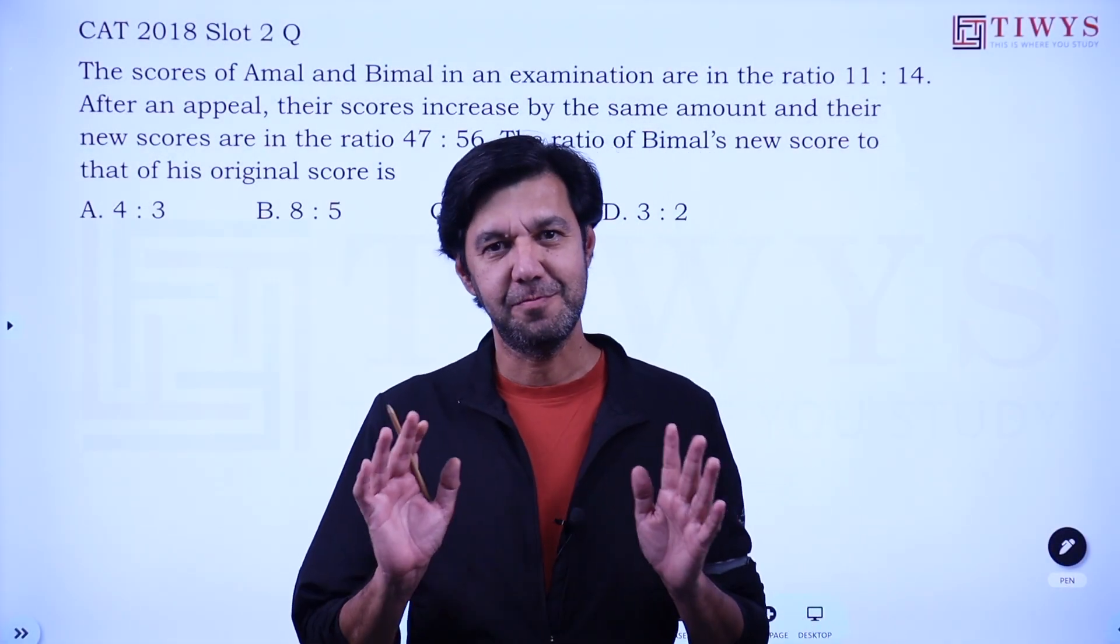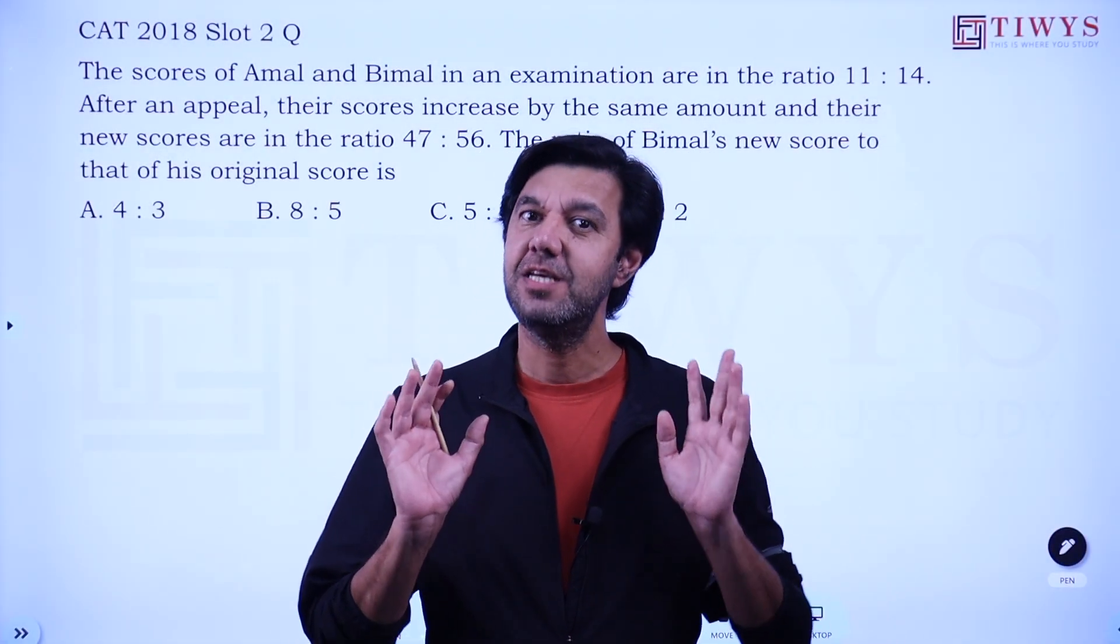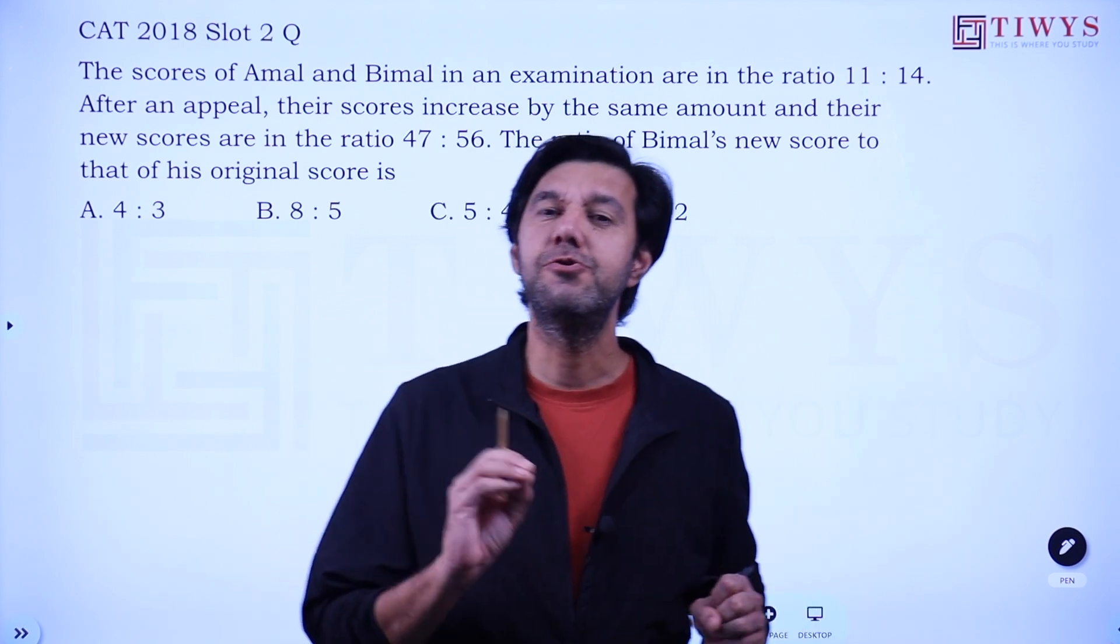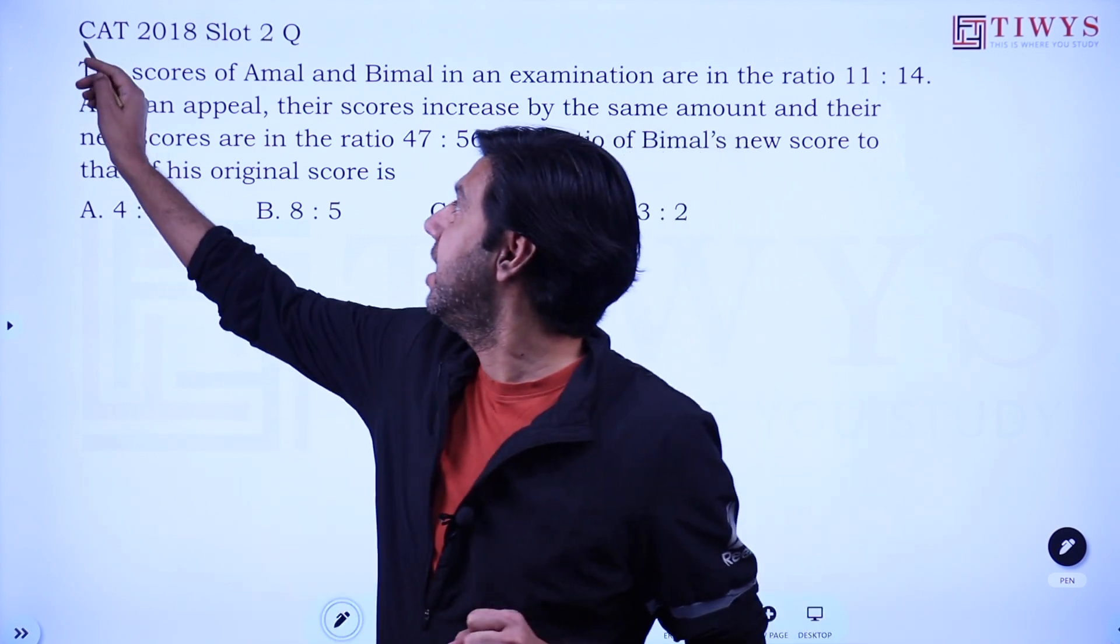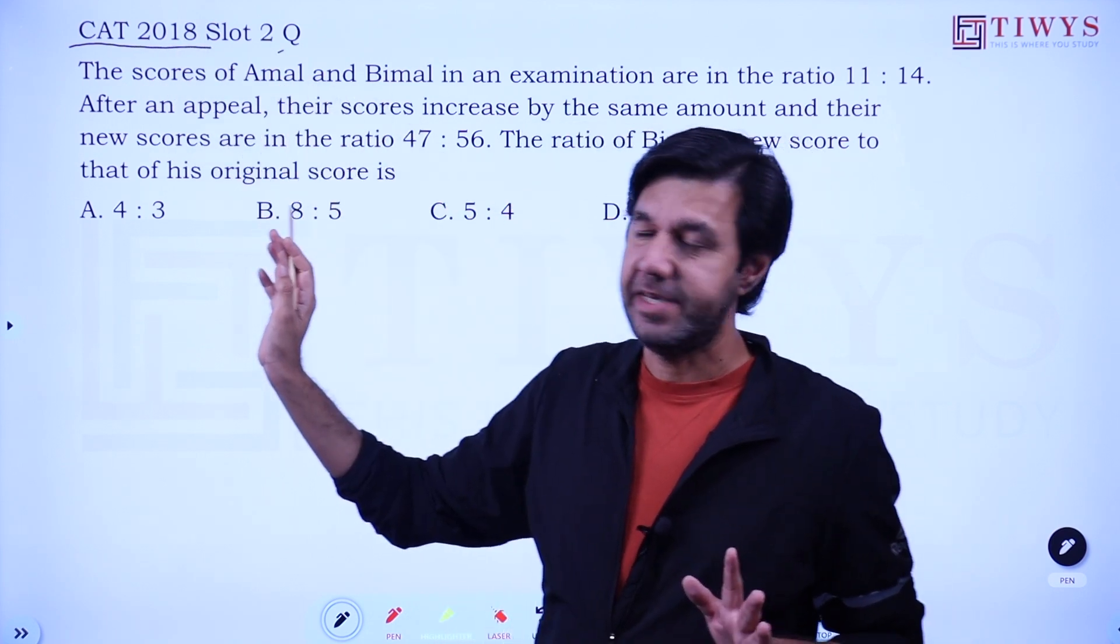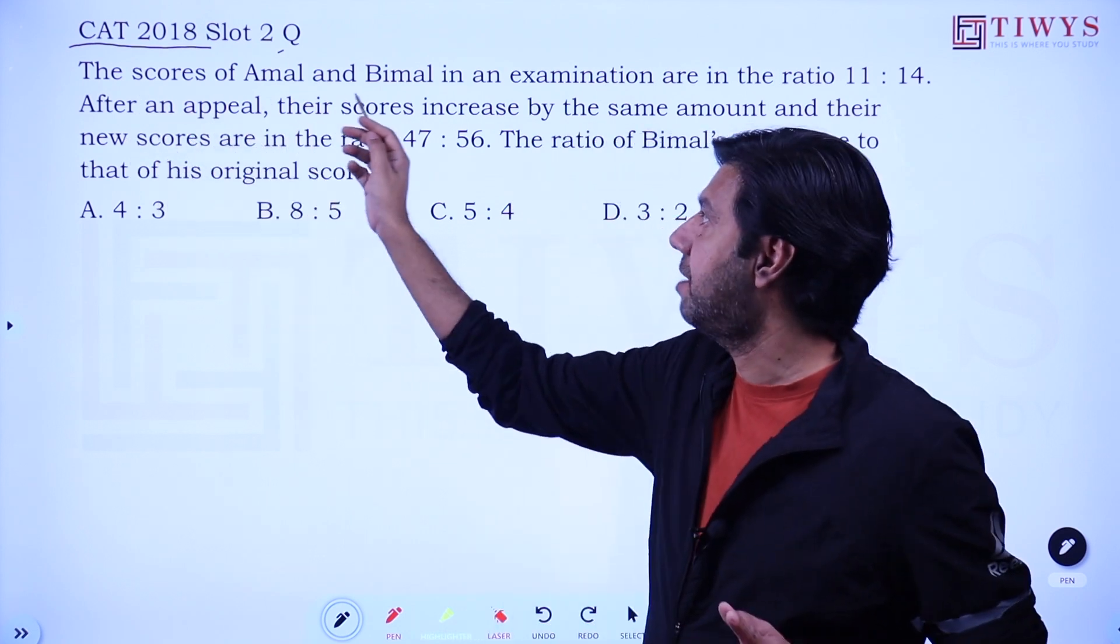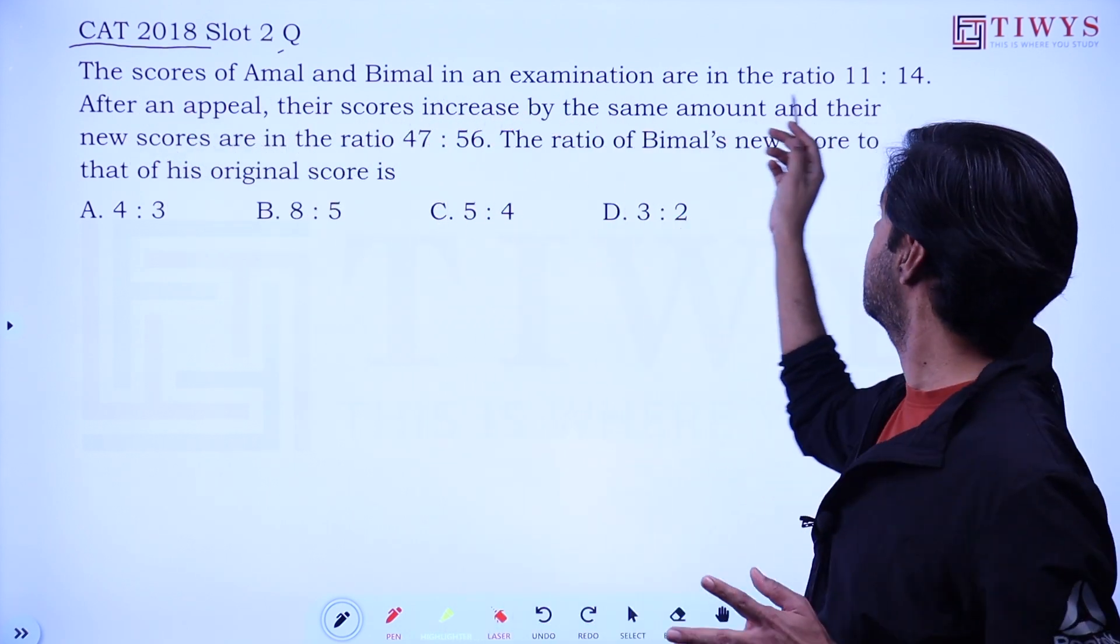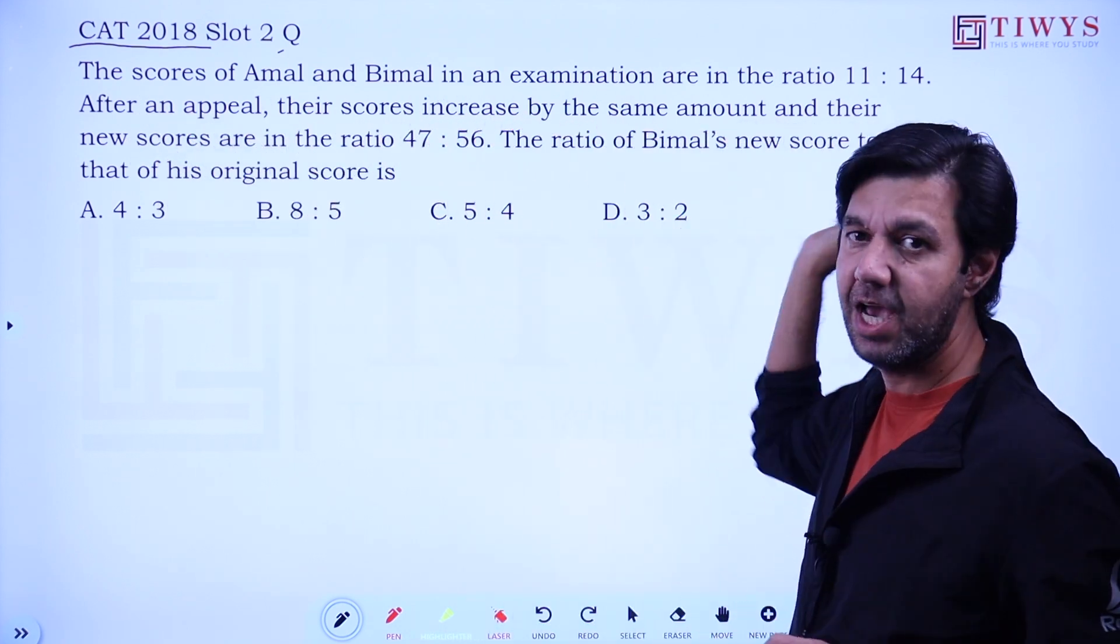In this video, I'll explain a nice approach, an intellectually stimulating approach, to reduce your calculation in an actual CAT 2018 question. The question is very easy in itself. The scores of Amal and Bimal in an examination are in the ratio 11:14, so we have one ratio.